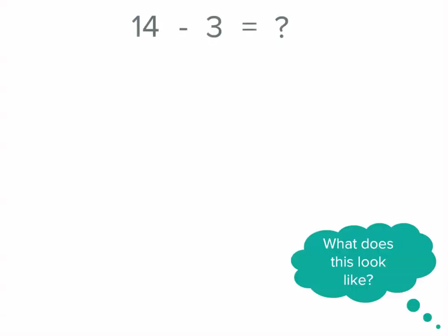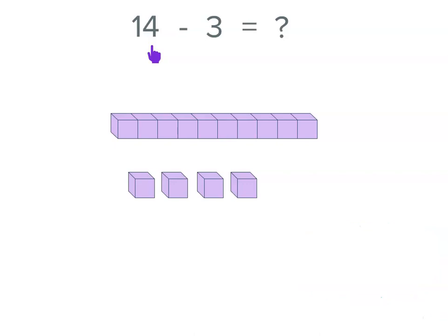What does that look like? Well, we could think of that using place value models. That's 1 ten and 4 units. Now, we're subtracting. So that means we're going to be taking away.